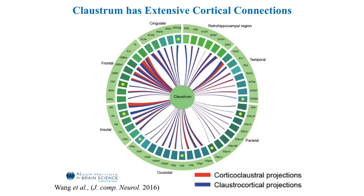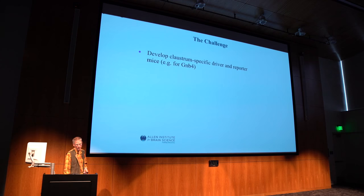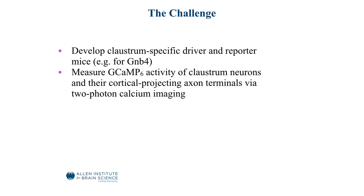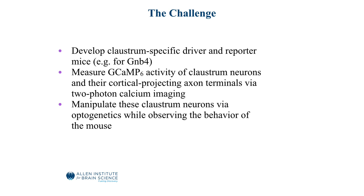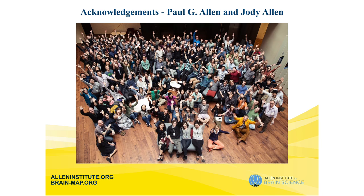So the question is: what happens if you manipulate neurons in the claustrum using various optogenetic techniques — turn them on and turn them off? The ongoing challenge is to develop specific transgenic animals, measure GCaMP6 activity in the claustrum both intrinsically and in the axons projecting into cortex, manipulate these neurons within a particular behavioral paradigm, and see what the effect is. All of that is the work of several hundred people shown here — this is the team at the Allen Institute. With that, I thank you for your attention.